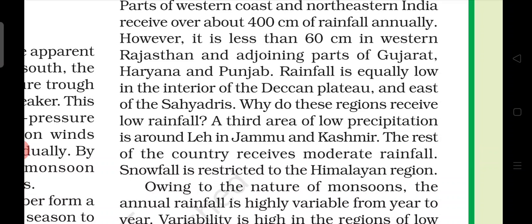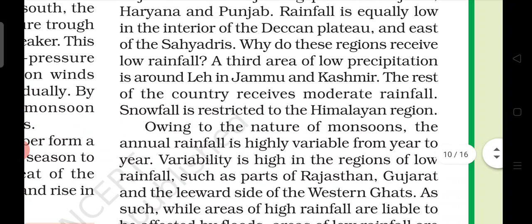Why do these regions receive low rainfall? A third area of low precipitation is around Leh in Jammu and Kashmir. The rest of the country receives moderate rainfall.